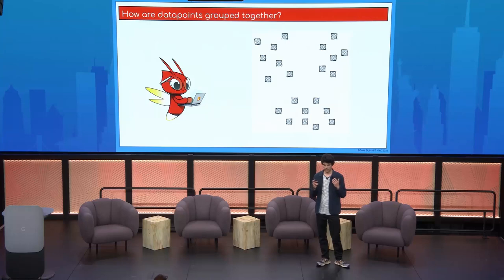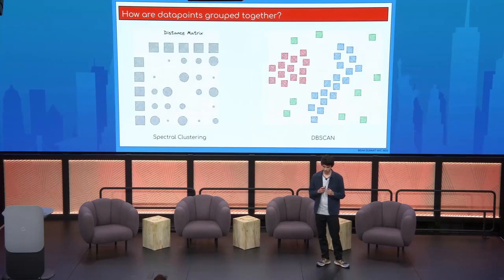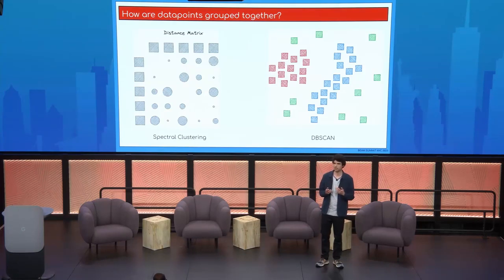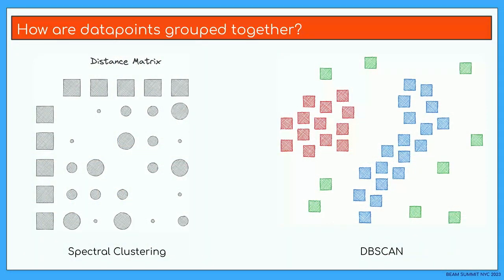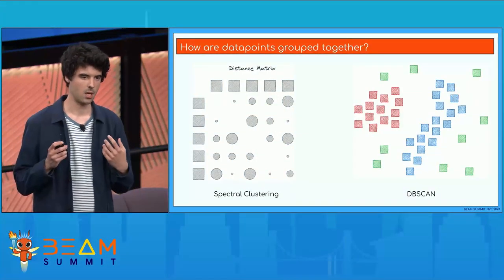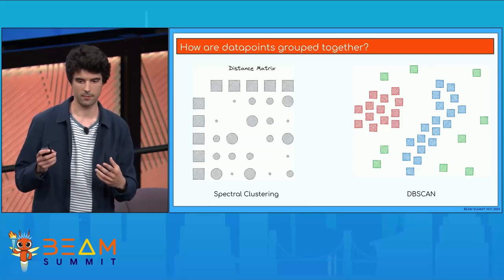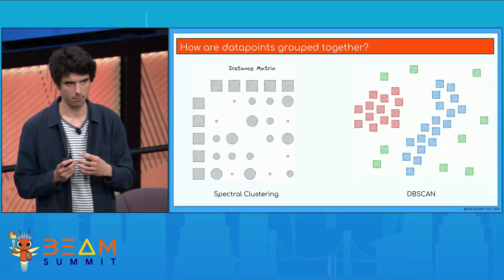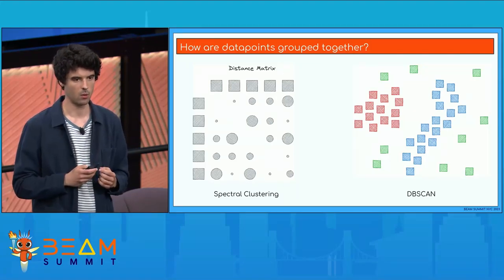How is that data actually grouped together? Well, clustering is actually not an algorithm itself — it's actually a collection of different algorithms. For instance, you have spectral clustering, which is based on distance matrices and eigenvalues — basically based on linear algebra. On the other hand, you could also use DBSCAN, which is density-based clustering. It will take a look at the density of how points are basically close together within the feature space.